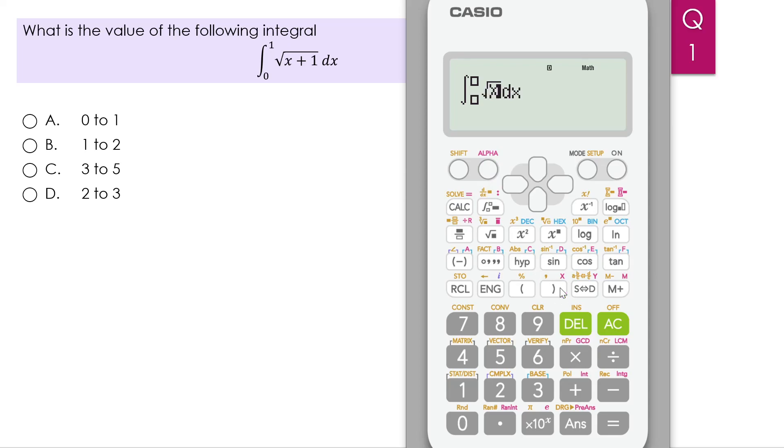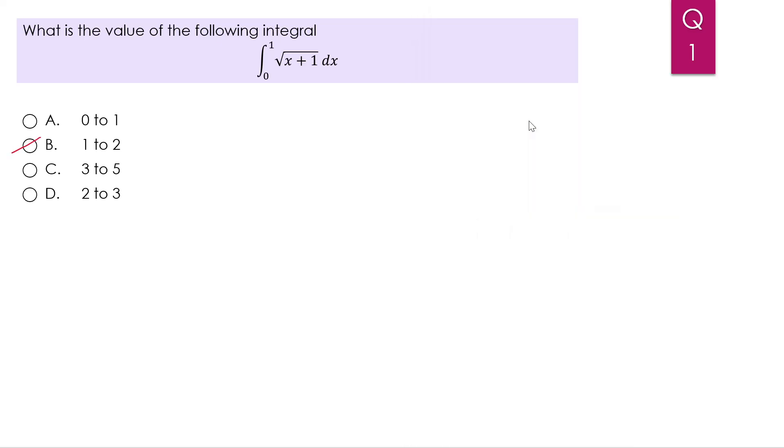And we input the square root alpha, then x plus 1. You go down from 0 to 1, and you press equal, so it's 1.218. So the value is between 1 to 2. So our answer is B.